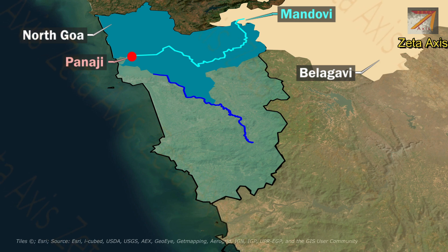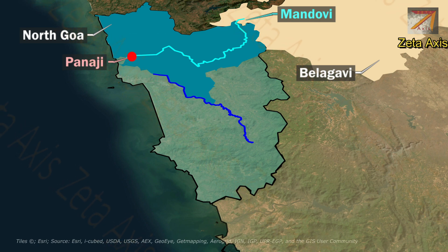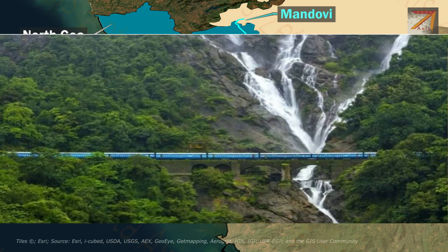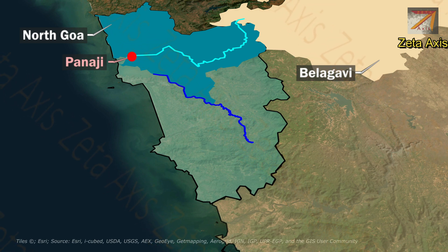Panaji is the state capital of Goa and it is situated on the left bank of the Mondovi river. The famous Dudhsagar Falls is also located on the Mondovi river in Goa.